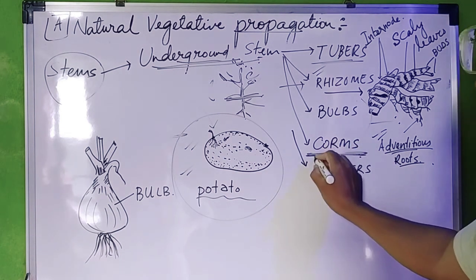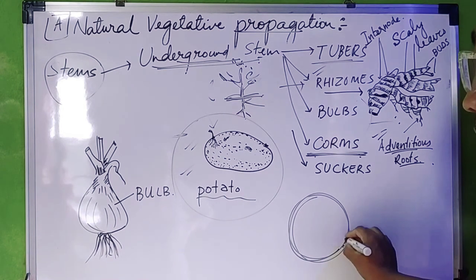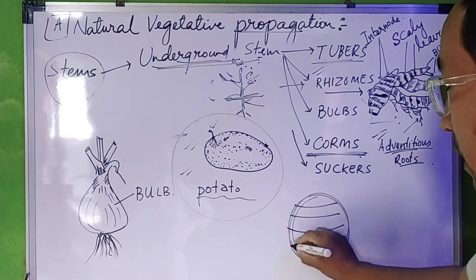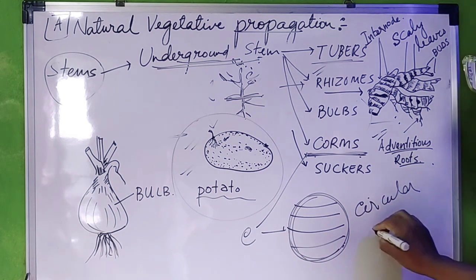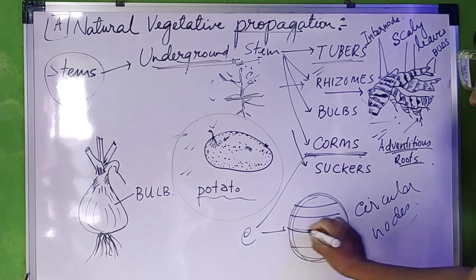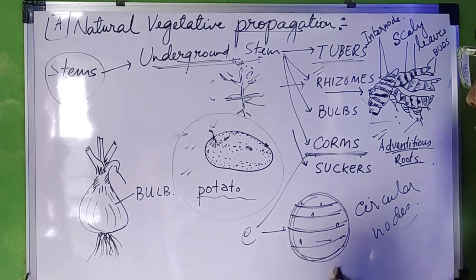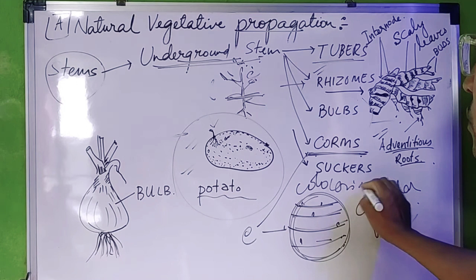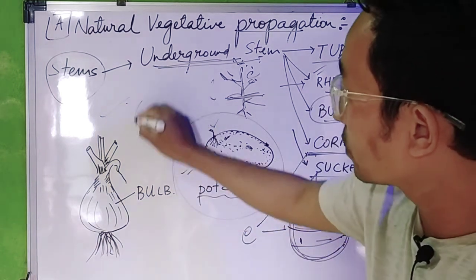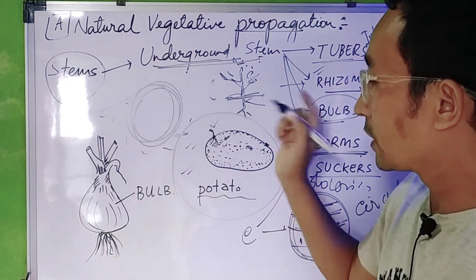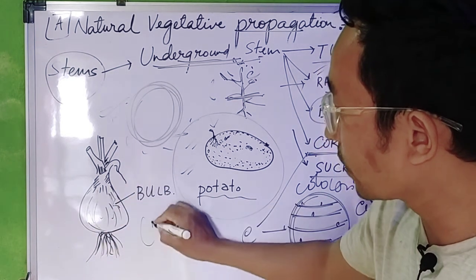This is the structure of the circular knot — you can remember C for corms, C for circular knots. This is the scale of the circular knot, the height and the shape. The difference is that the bulb has a scale and it is fleshy.